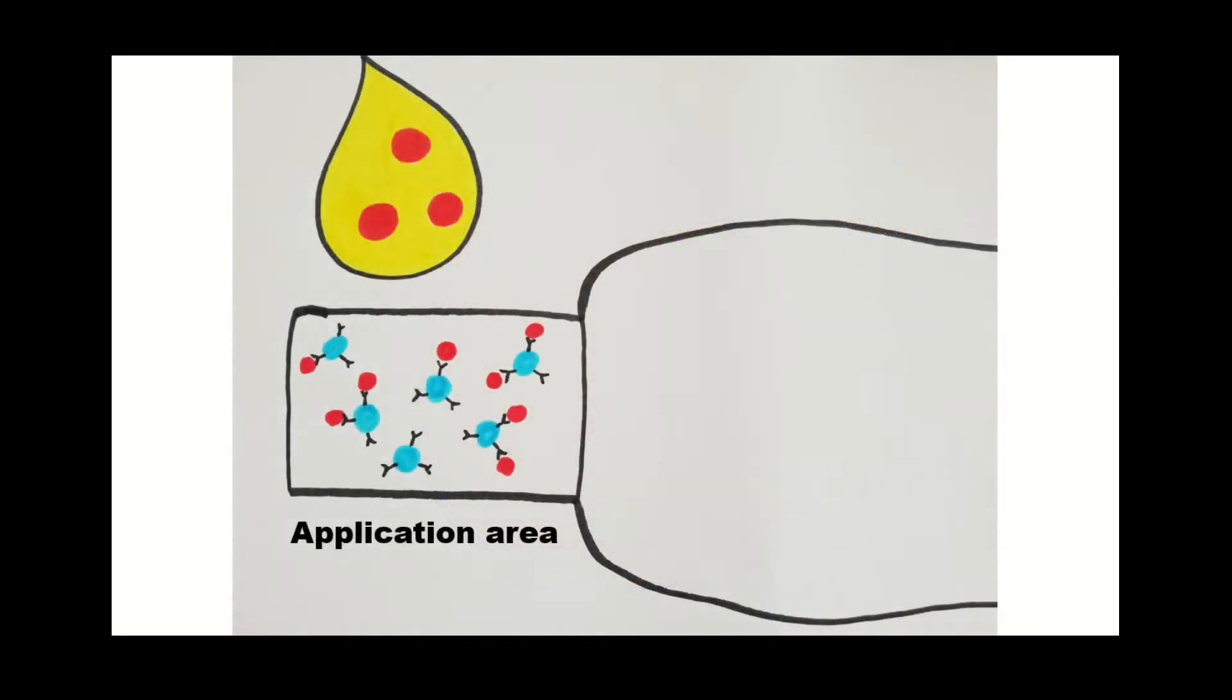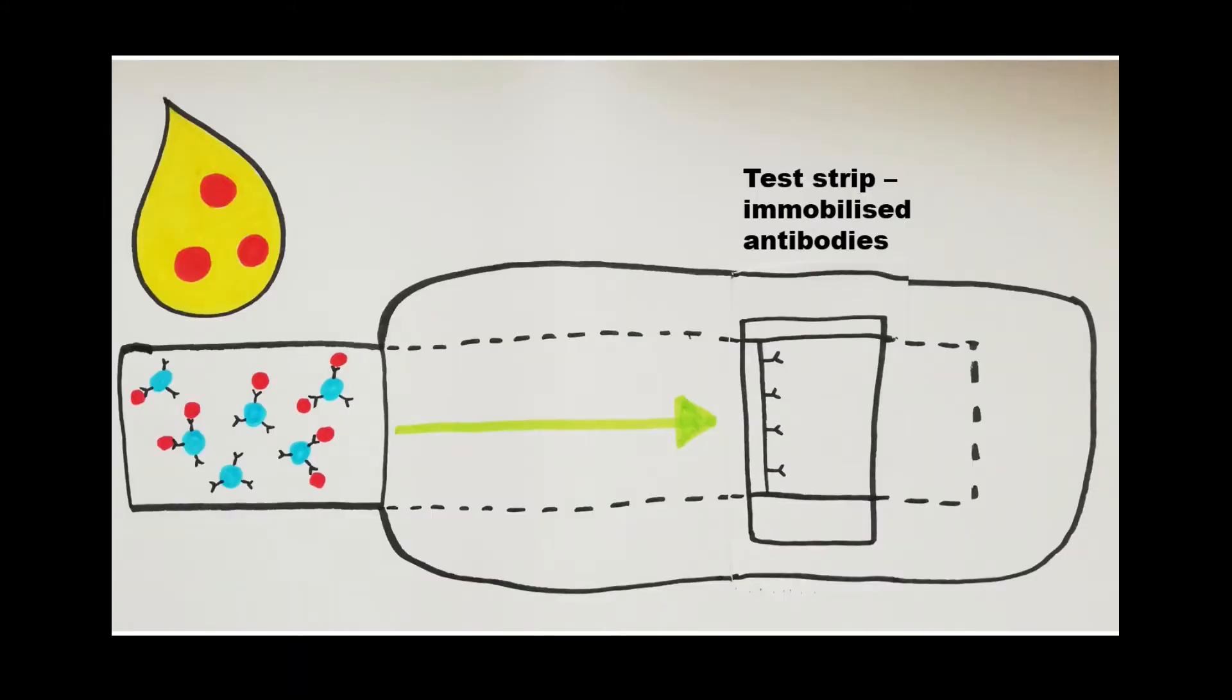On the pregnancy test, the first area we'll look at is the application area. This area is full of HCG antibodies attached to blue beads. When the urine is applied to the application area, any HCG hormone will bind to the antibodies on the beads. The liquid then moves up the stick a bit like how ink travels up chromatography paper.